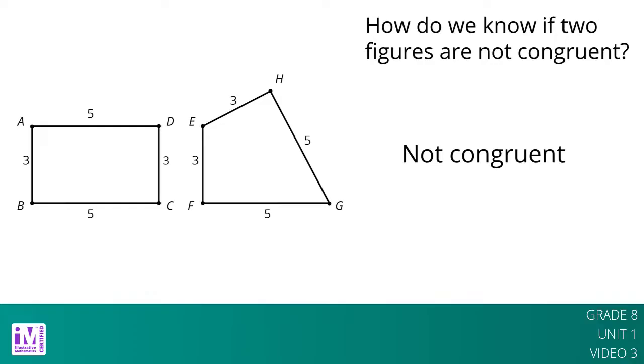Lastly, if two polygons have the same side lengths in the same order, but different corresponding angles, the polygons can't be congruent. For example, parallelogram JKLM can't be congruent to rectangle ABCD.